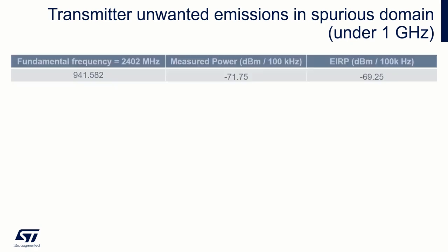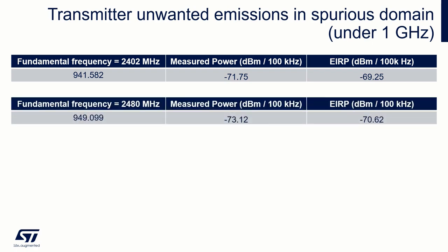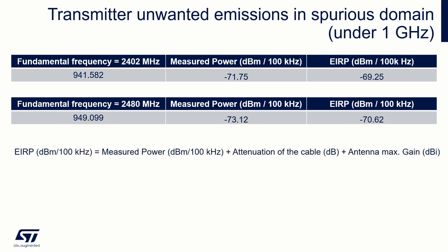Let's calculate the nominal levels of these products — although they were not caused by the Bluetooth transmitter, just as an example. It was measured with 100 kHz RBW. Adding cable loss and antenna gain, we get the EIRP value. All are deeply under the limit of minus 36 dBm over 100 kHz.